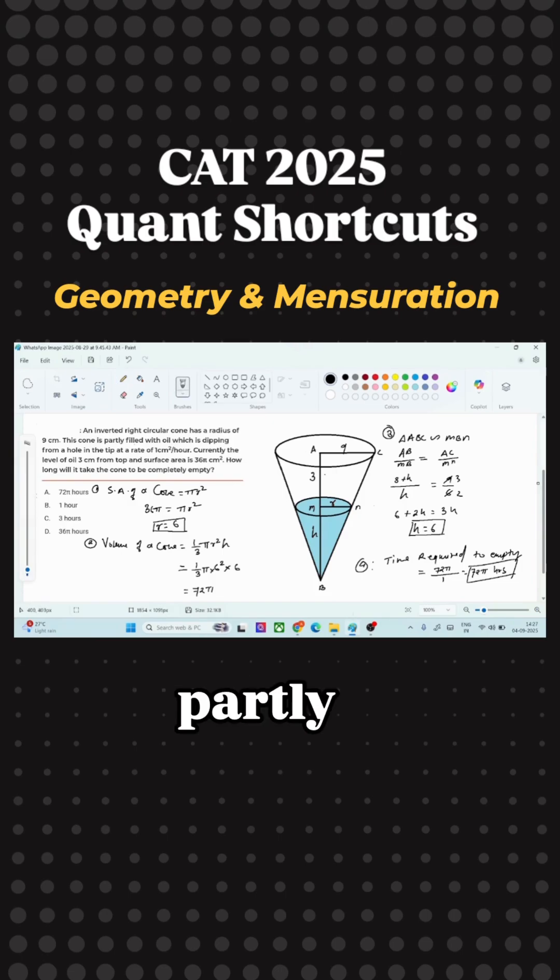And this cone is partly filled with oil which is dripping from a hole. So this inverted cone is here. The oil is dripping at the speed of 1 cm per hour. Currently the level of oil is 3 cm from the top. So from the top to somewhere in the middle of the cone, this is 3 cm. So this is given as 3 cm.